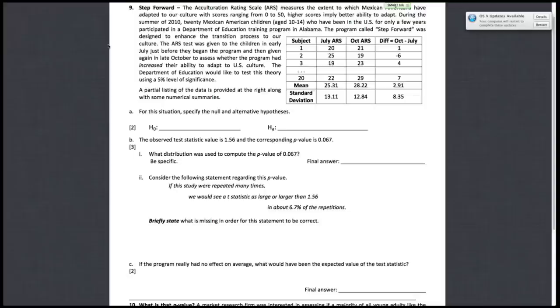And so to measure that, we take their ARS score in July before the training program, and then their ARS score in October after their training program for each subject.